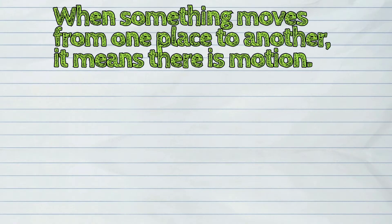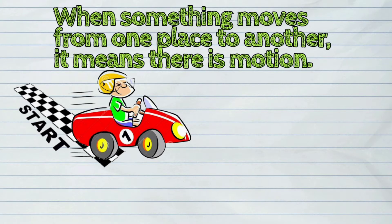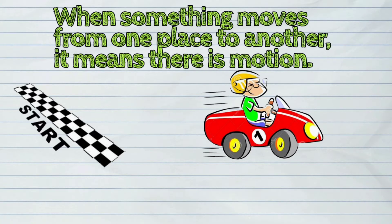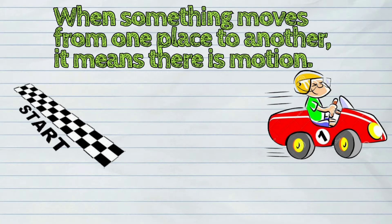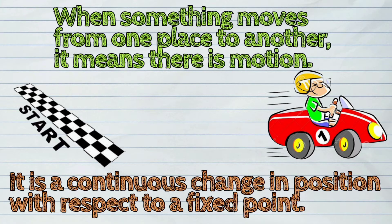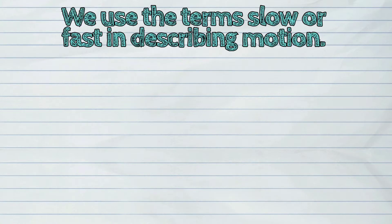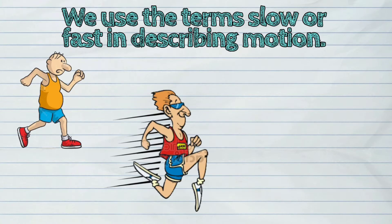When something moves from one place to another, it means there is motion. It is a continuous change in position with respect to a fixed point. We use the terms slow or fast in describing motion.